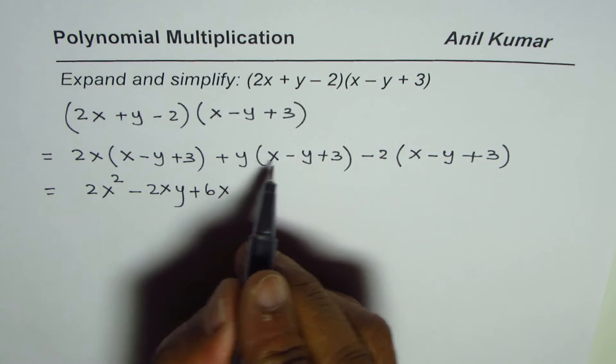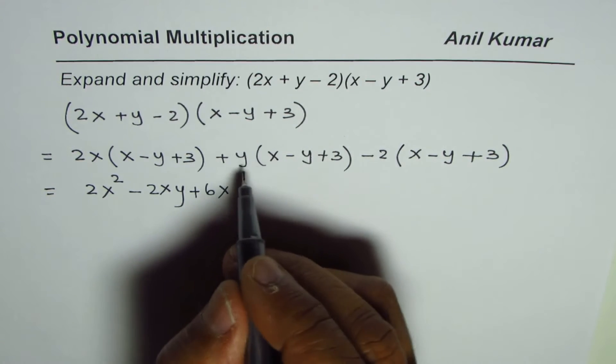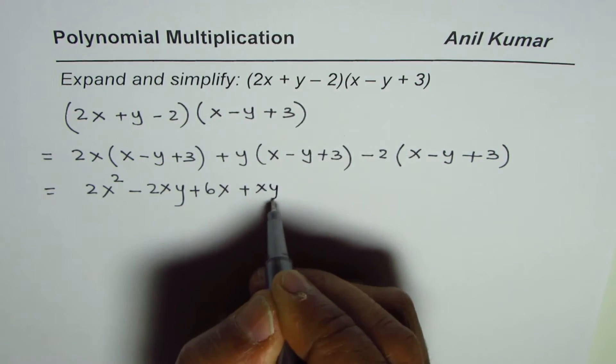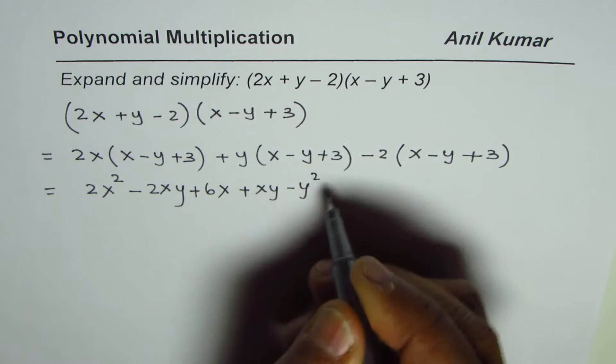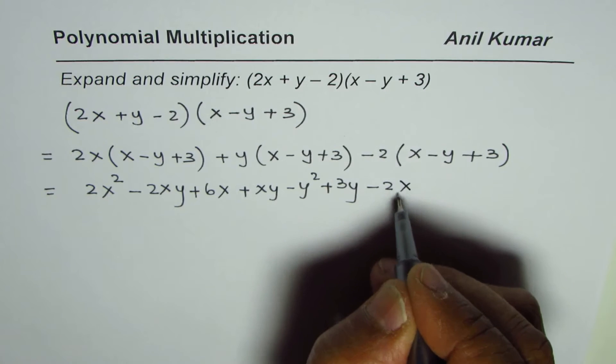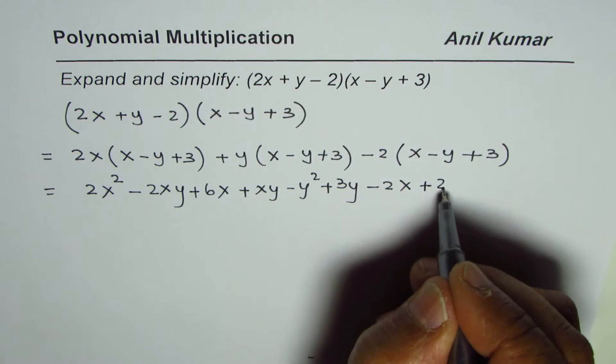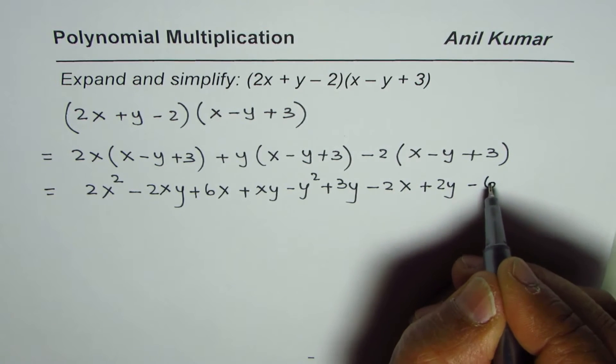Now we will do y. It is good to write x first and then y: xy - y² + 3y. Multiplying by -2 gives us -2x. The constants come before the variable: +2y and -6.